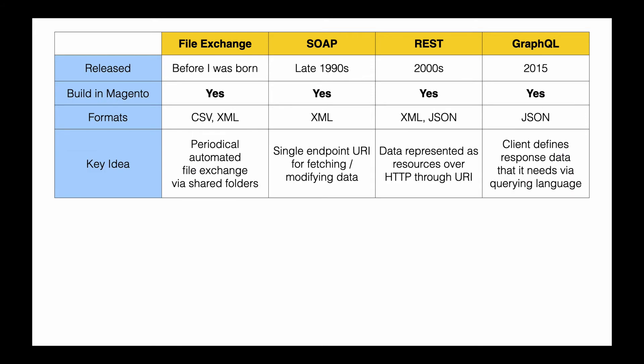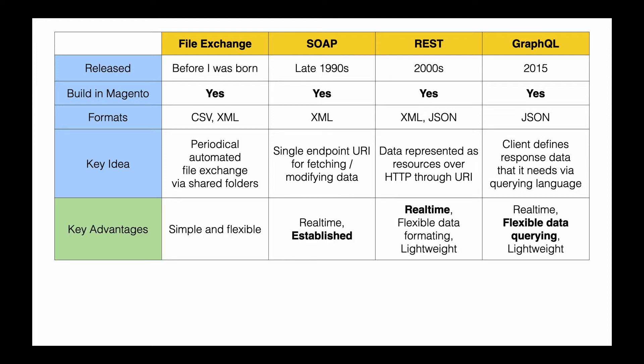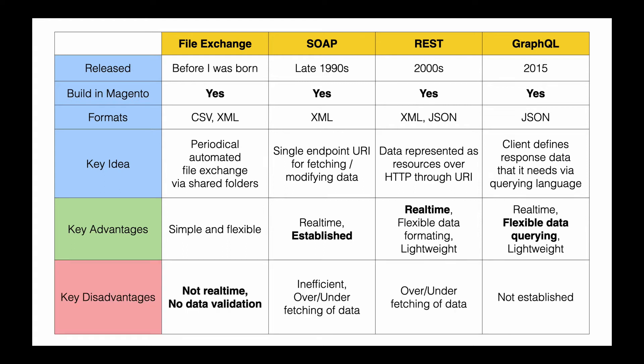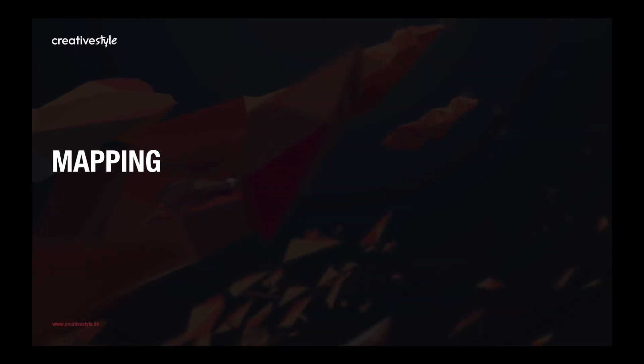Nearly every system supports automatic export or import of files, which can happen, for instance, once at night, but has some disadvantages compared to interfaces that communicate directly via API. The key advantages of file exchange are simplicity and flexibility. SOAP is well established in the SAP and Microsoft world, while REST and GraphQL give you real-time communication and flexibility. The disadvantage of file exchange is there is no real-time communication — stock updates happen only once at night or once every hour, and there is also no data validation.